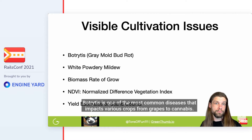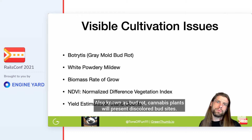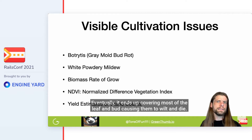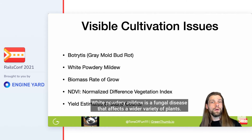Botrytis is one of the most common diseases that impacts various crops from grapes to cannabis. Also known as bud rot, cannabis plants will present discolored bud sites. These spots change color from a healthy bud color to gray to brown, eventually covering most of the leaf and bud causing them to wilt and die.